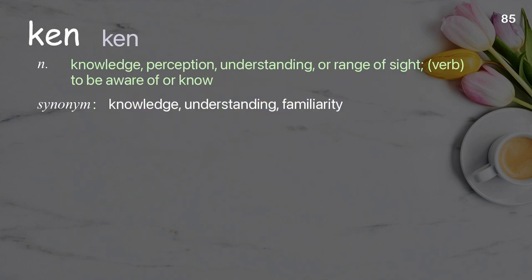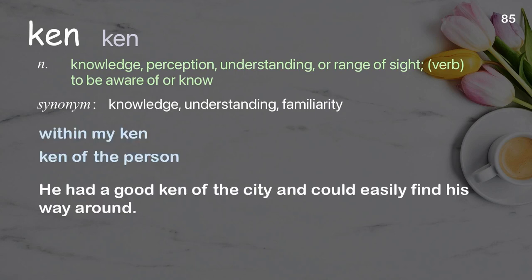Ken: knowledge, perception, understanding, or range of sight. Verb: to be aware of or know. Examples: within my ken, ken of the person. He had a good ken of the city and could easily find his way around.